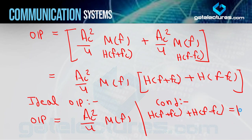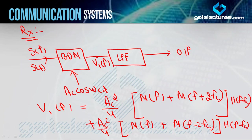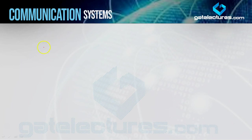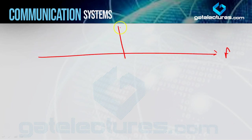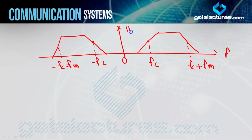Toh yahan par agar main HF ko dhyan se dekhoon - toh jo aapka HF hai, non-ideal filter hai. Main kya karta hoon, HF ko dobara draw karta hoon next slide mein, aur uske baad H(F − FC) aur H(F + FC) bhi hum draw kar lete hain. Toh yeh aapka jo HF hai, woh kuch is tarah se hai - non-ideality hai filter mein. Positive side bhi aap draw kar dijiye aur negative side bhi draw kar dijiye. Toh yeh jo hai aapka: FC, and this point is FC plus FM. Aur yeh point kya ho jayega aapka: minus FC, aur this point: minus FC minus FM. Toh yeh hai aapka HF.